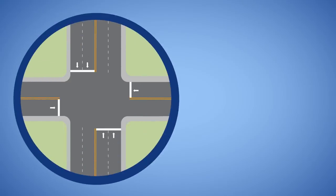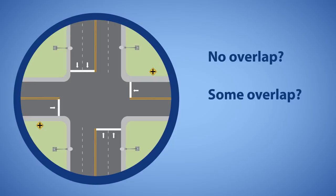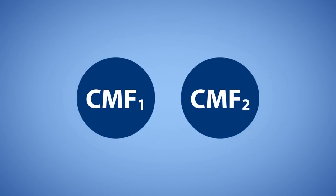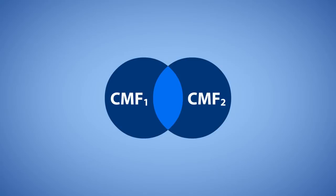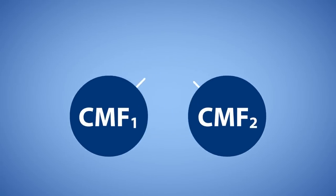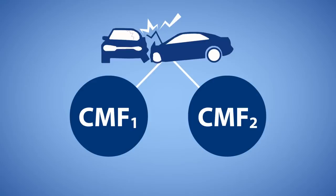Consider the potential overlap for installing lighting on the major road and installing advanced intersection warning signs on the minor road of a two-way stop-controlled intersection. Do you think the two individual countermeasures target the same crash types? Would there be no overlap, some overlap, or complete overlap? Engineering judgment is critical in this process. To determine the potential for overlap, consider the crashes and locations targeted by the countermeasures. There is more potential for countermeasure effects to overlap if the individual countermeasures target the same crash types and are applied to the same location.